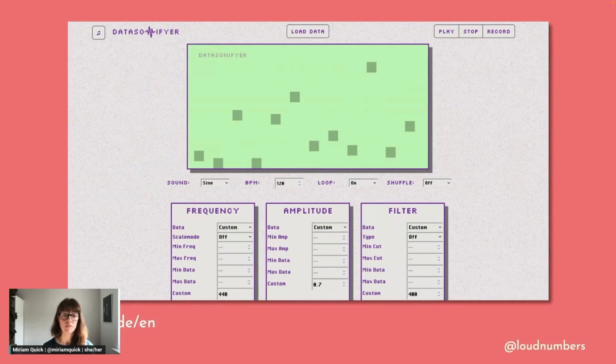Another web-based tool that was released very recently is called Data Sonifier. It's super easy to use. It involves no code and you can map a dataset to up to six different audio parameters, including filters, effects and rhythm. And the tool exists in both English and German language versions.